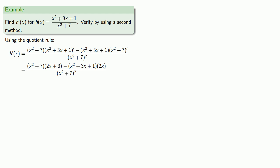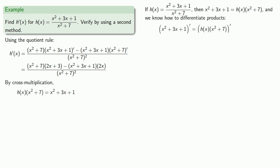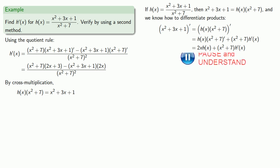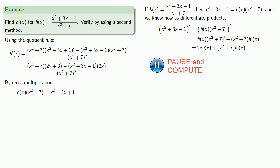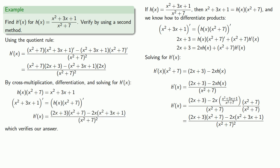Let's verify that this actually is the derivative. If h of x is (x² + 3x + 1) over (x² + 7), then cross-multiplying gives us x² + 3x + 1 equals h of x times (x² + 7). We know how to differentiate products, so the derivative of h of x times (x² + 7) is h of x times the derivative of the second plus the second times the derivative of the first. On the left-hand side we have the derivative of x² + 3x + 1, so we fill that in, then solve for h prime of x. After all the dust settles, we verify this is the same as what we got using the quotient rule.